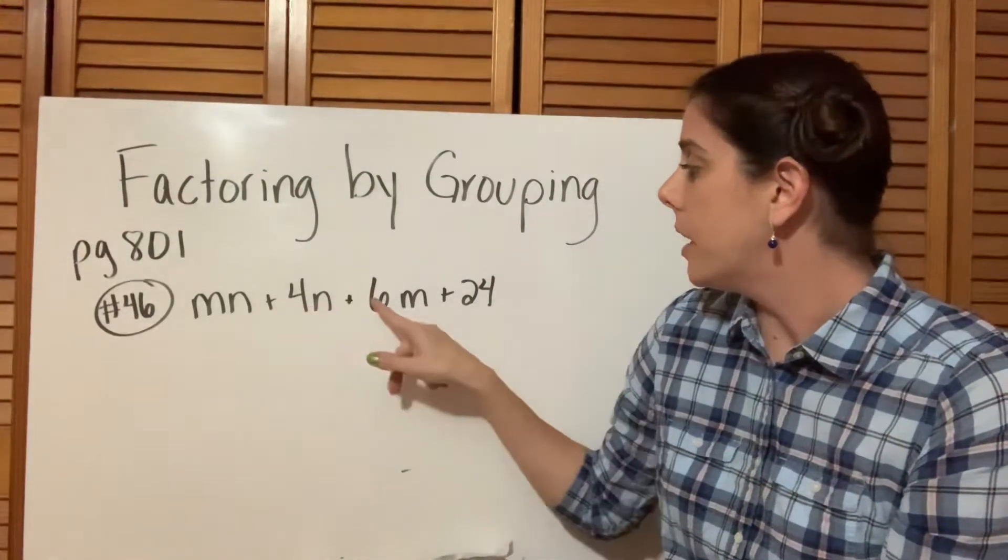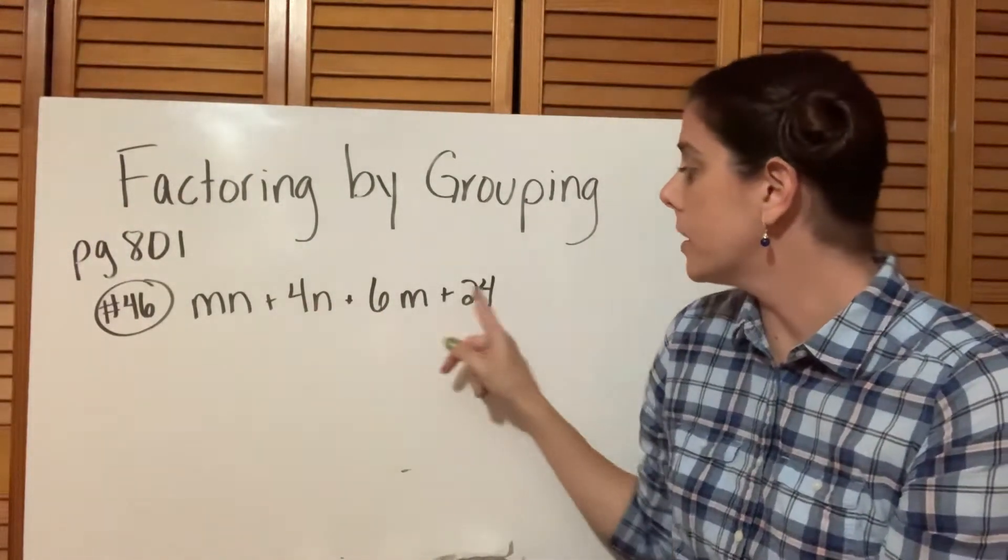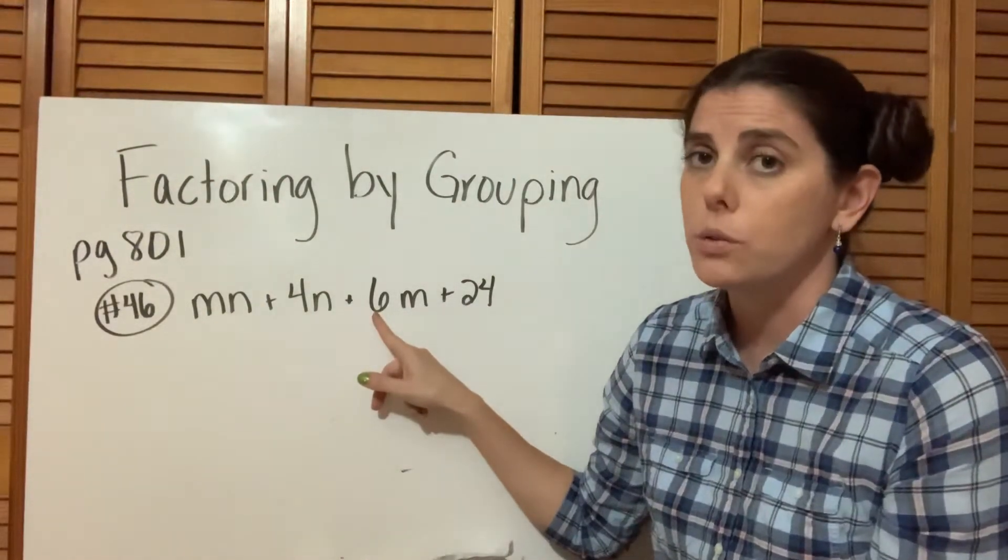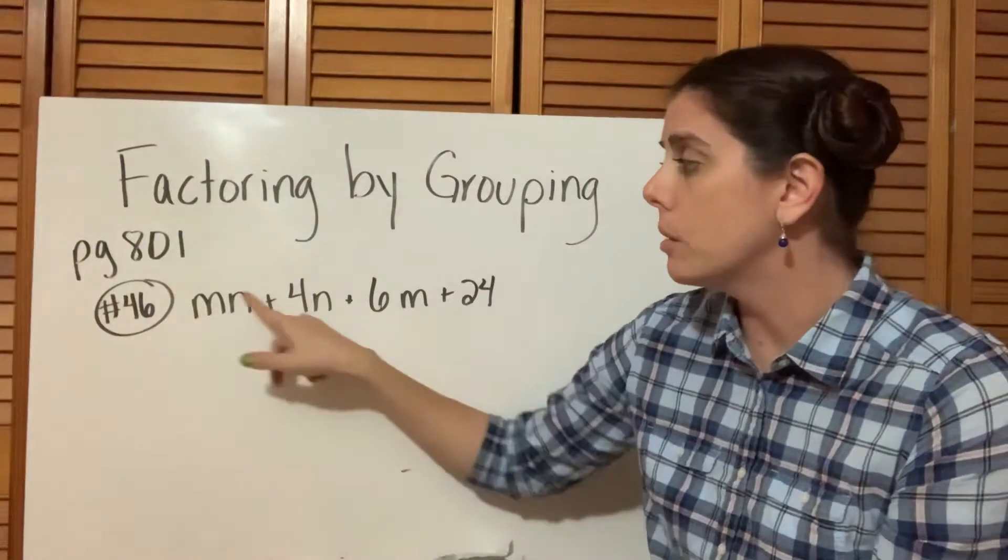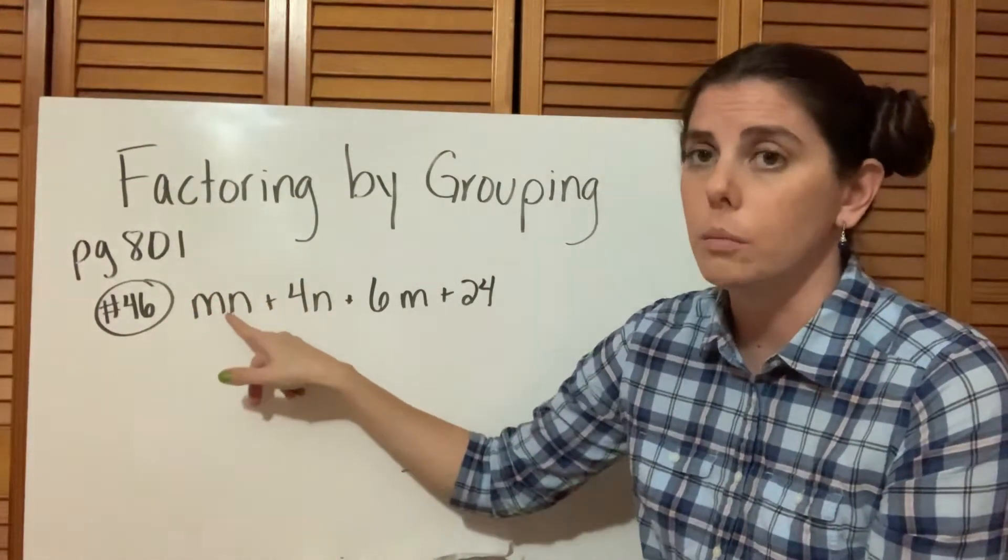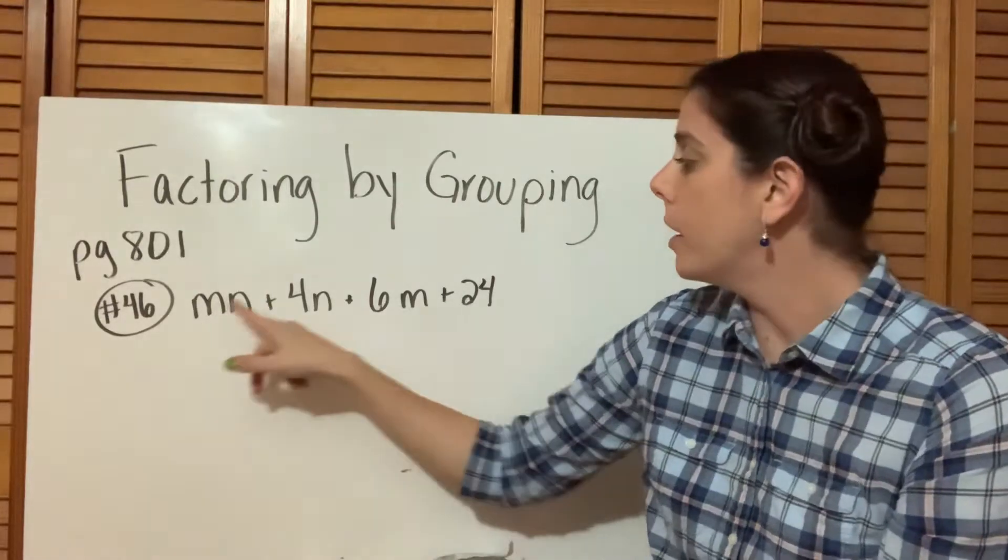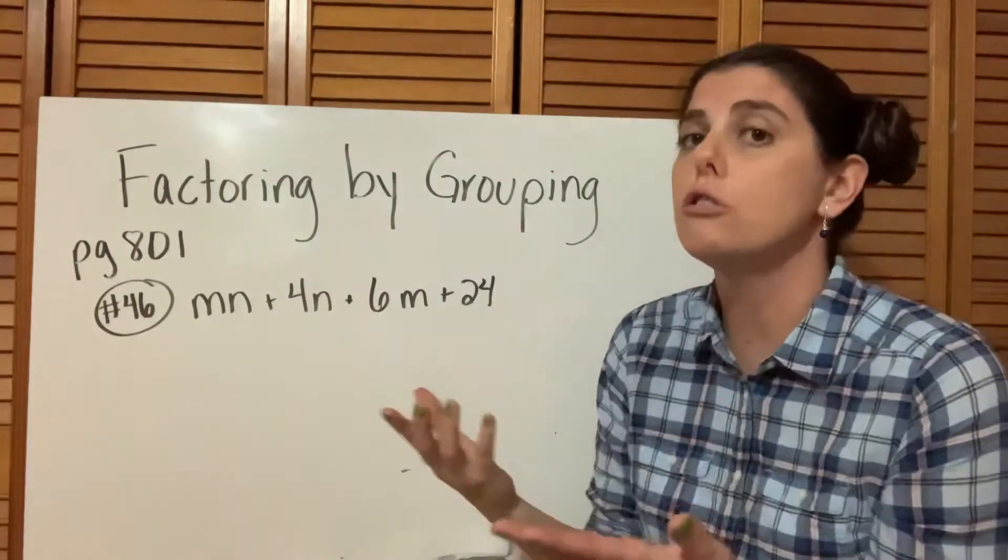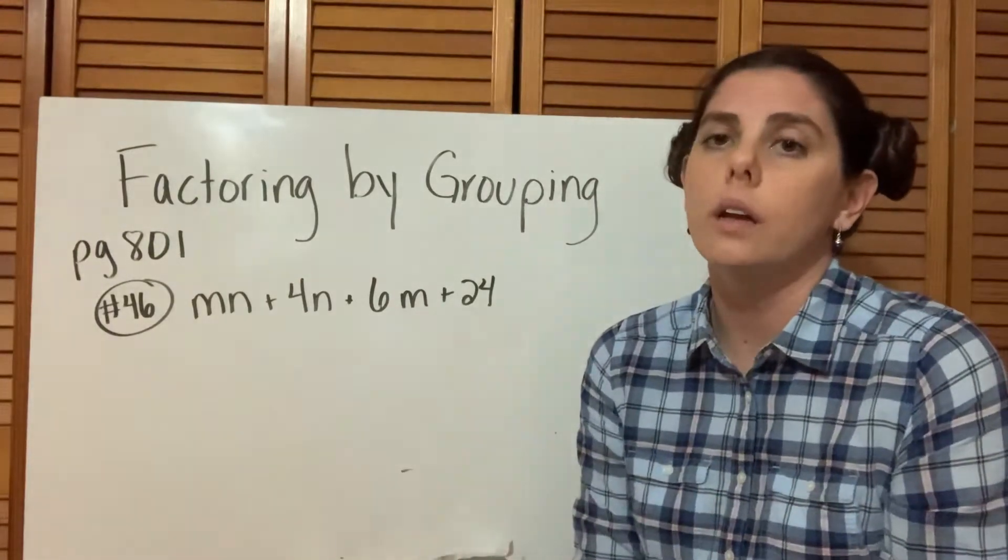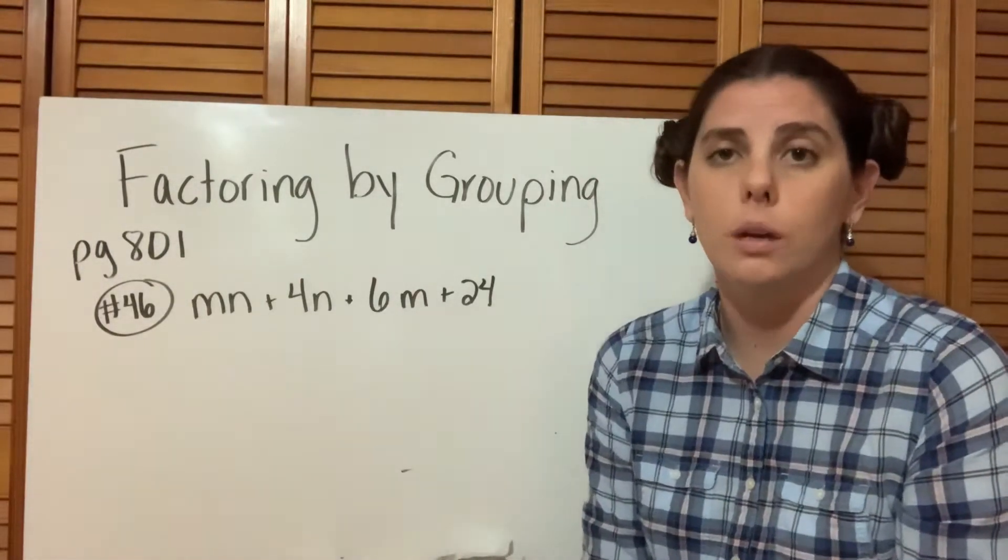We can say 4 goes into 24 and 6 goes into 24, but the GCF of 4 and 6 is 2. However, if we look at this term, it doesn't even have a coefficient, so you can't divide the first term by 2. No matter which way you look at it, there's no GCF for each of these terms. This is when we practice factoring by grouping.